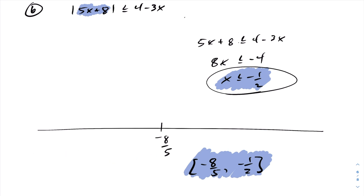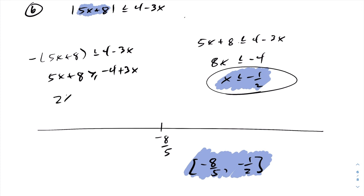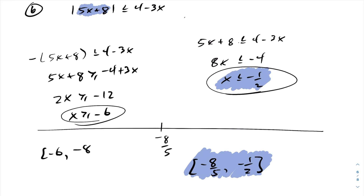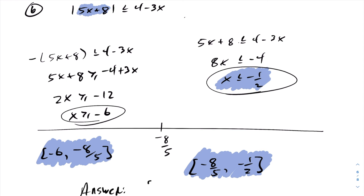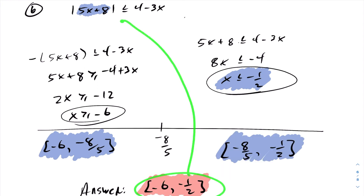Moving to the left-hand side, any value we choose inside will be negative. So I can drop that absolute value symbol, but I have to put a minus sign in front. Multiplying across by minus 1, I have to switch that inequality and distribute that minus sign. Subtracting 3x from both sides, we get 2x is greater than or equal to negative 12, so x is greater than or equal to negative 6. Putting this together, the answer goes from square bracket negative 6 until negative 8 fifths. The complete answer goes from negative 6 square bracket until minus 1 half, so any value between negative 6 and minus 1 half will satisfy the inequality.